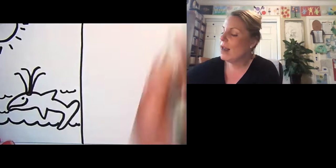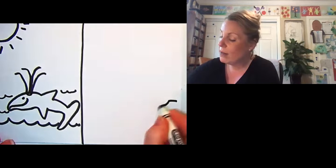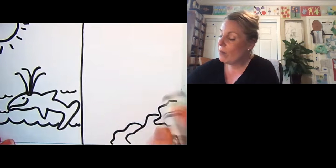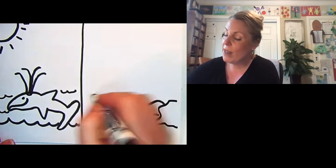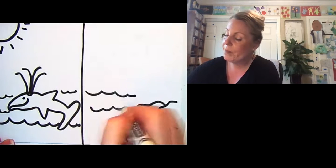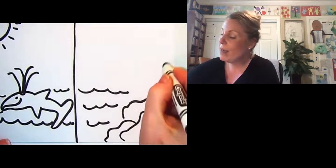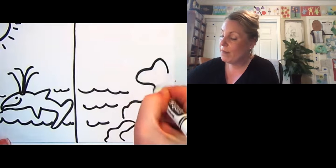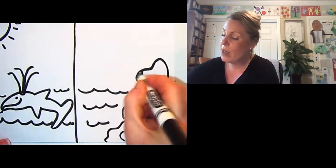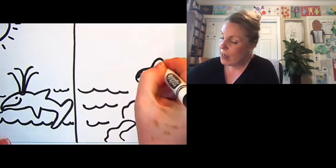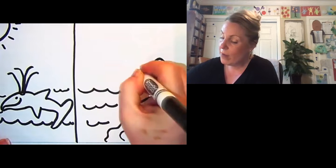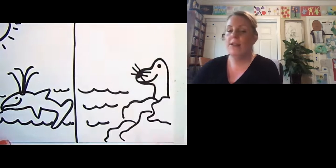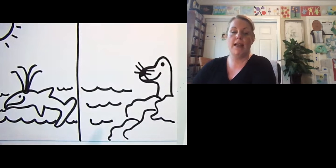And then on my other side, I'm gonna draw some rocks. Because I know sometimes sea lions like to hang out where it's nice and warm. They got some whiskers coming out. Okay. And so I have my dolphin and I have my sea lion.